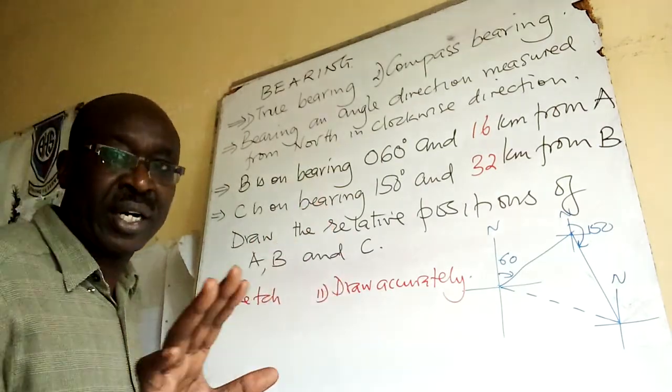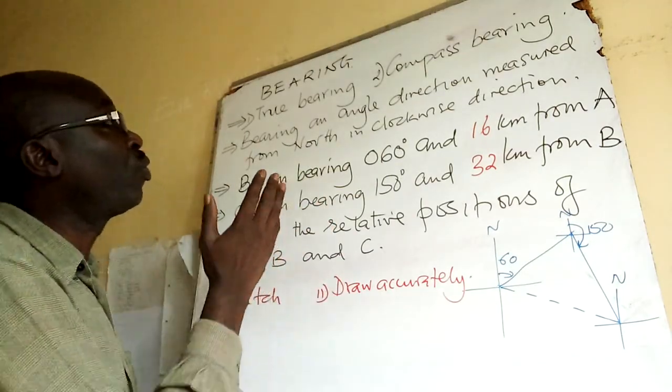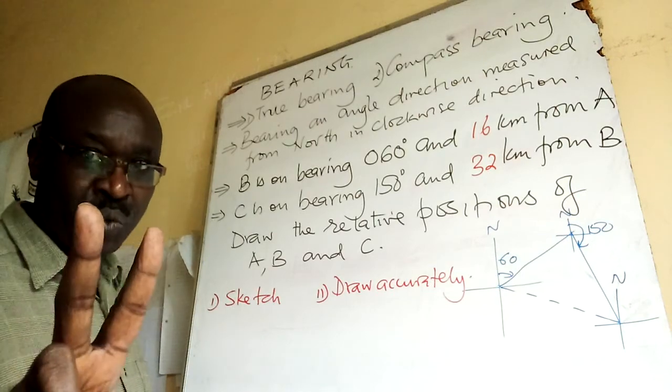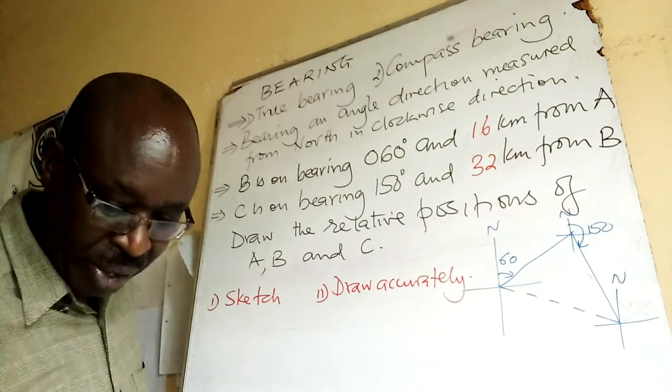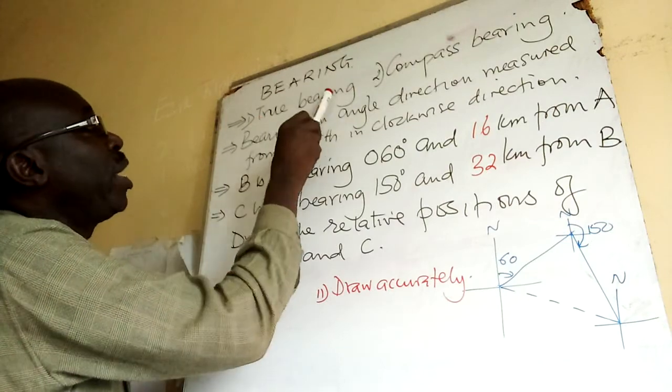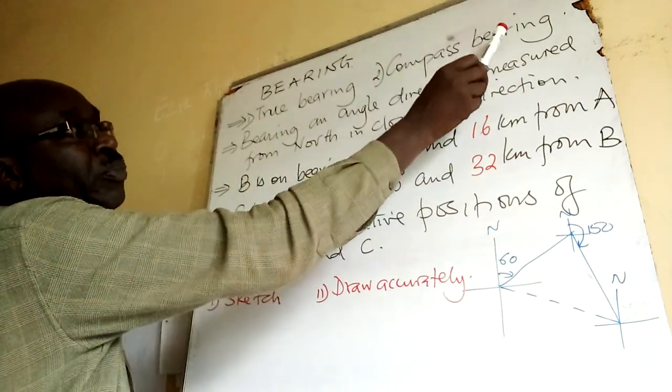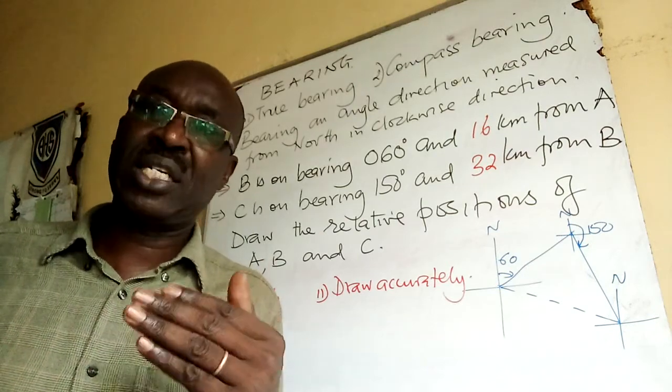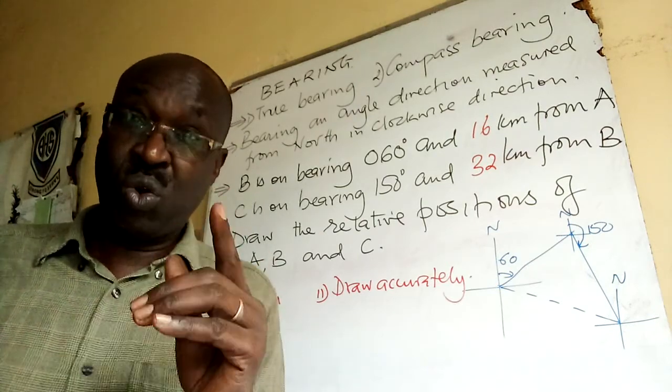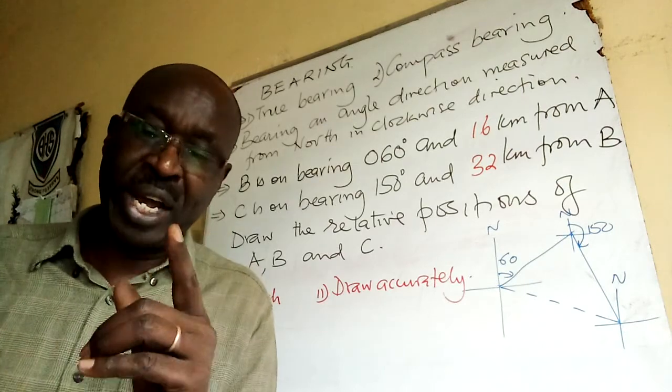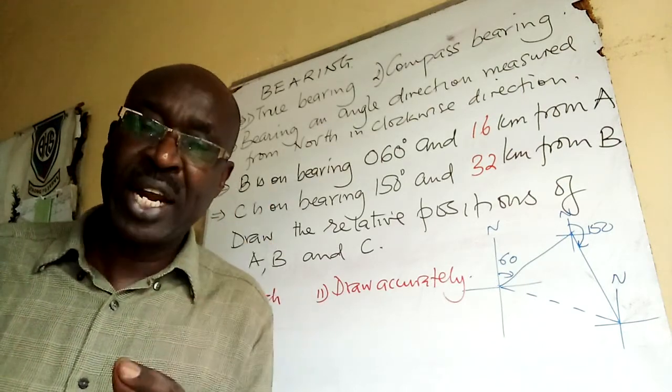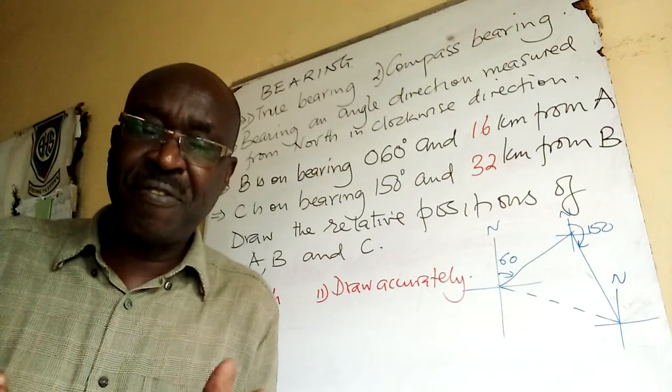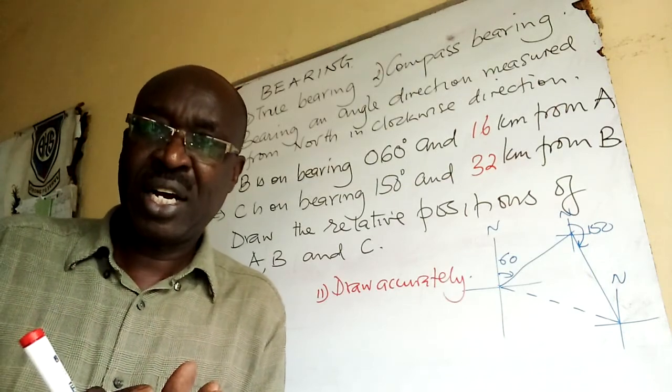So bearing that we are handling is true bearing but we have two types. You can be asked about true bearing and compass bearing. What I'm handling is true bearing. A true bearing is given in three figure. So it is a three figure system.